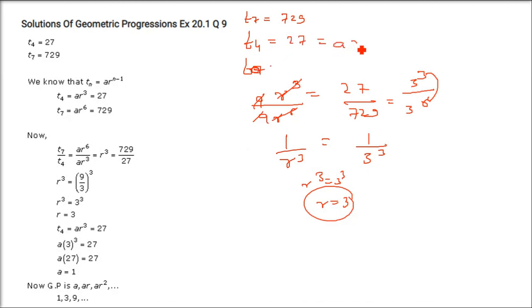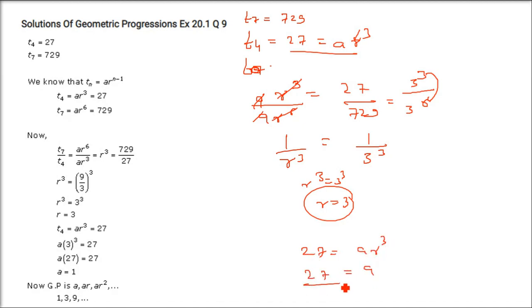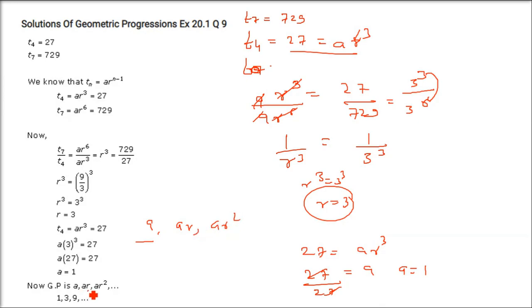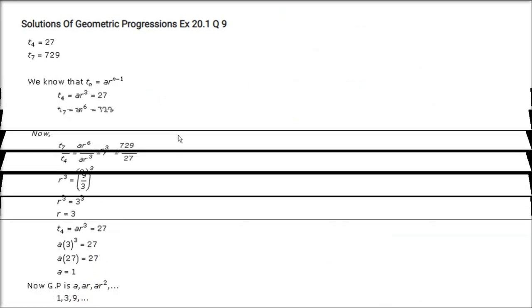Substituting r = 3 into a·r^3 = 27: a·27 = 27, so a = 1. The GP is found as a, a·r, a·r²... which gives 1, 3, 9, 27...